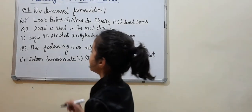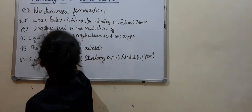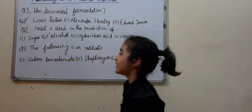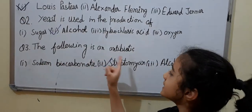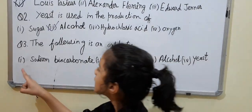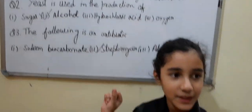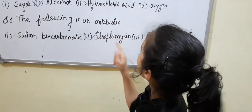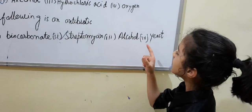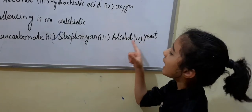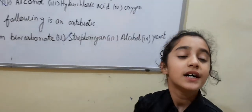The correct answer is alcohol. Question number 3: The following is an antibiotic — Number 1, sodium bicarbonate; Number 2, streptomycin; Number 3, alcohol; Number 4, yeast.